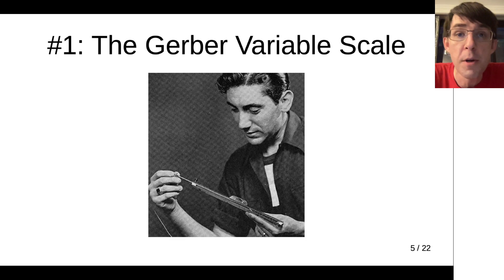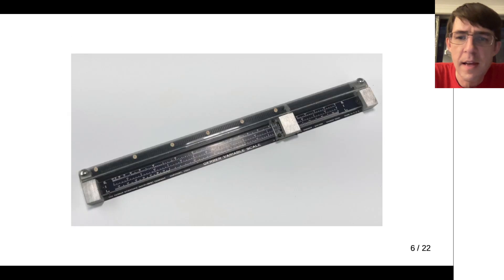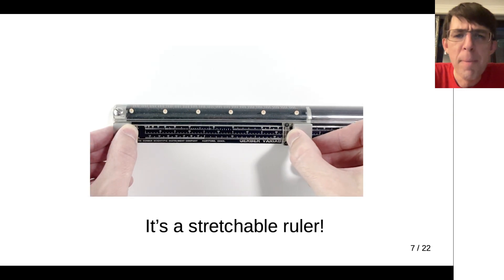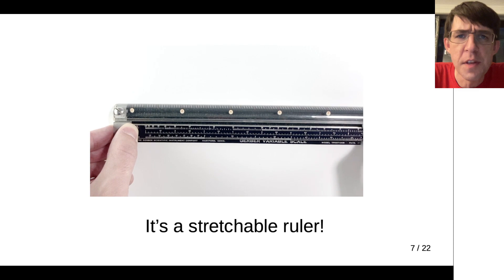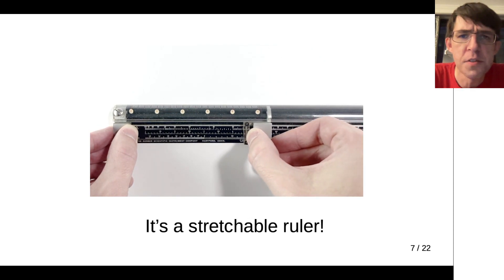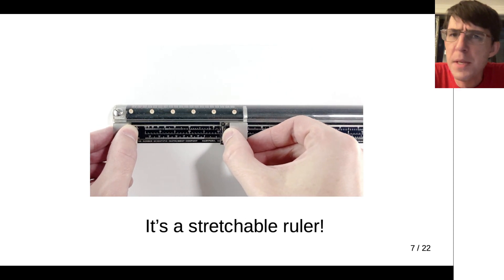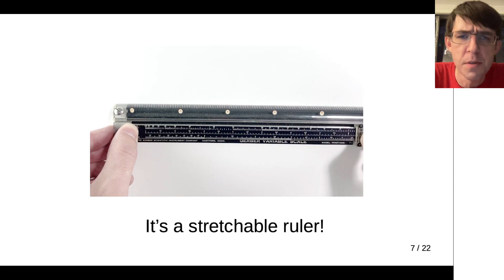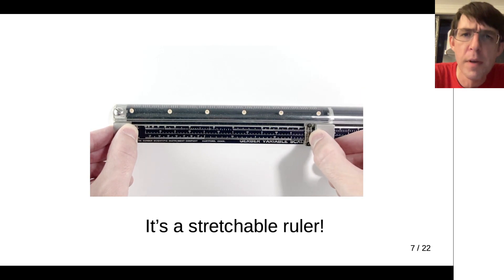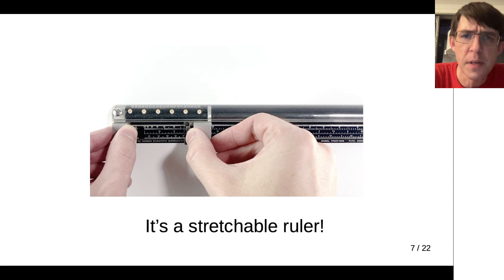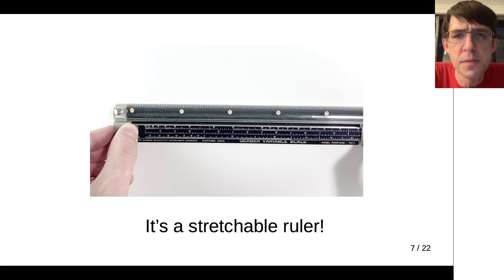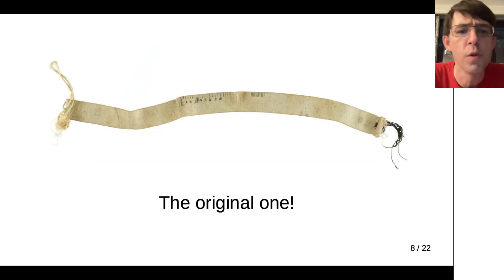The first one I want to talk about is the Gerber variable scale. There's Joe Gerber with the variable scale. This was his flagship product. It looks like that. It's about the size of an ordinary ruler. But it stretches. That's the interesting thing about the Gerber variable scale. It's a stretchable ruler, which to me is a crazy idea just because a ruler, the whole point of it is that it has a specific distance. It doesn't stretch, but the variable scale is a stretchable ruler.